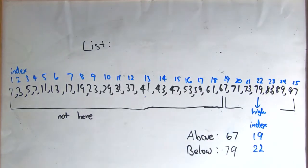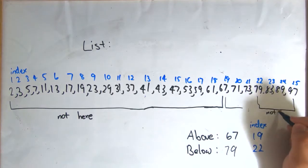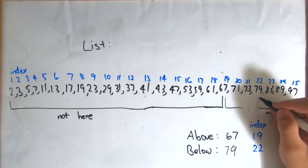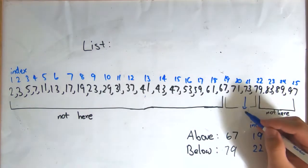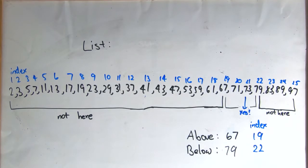79 is bigger than 73, so we have to look between the 19th and 22nd number now. The midpoint between these two numbers to the nearest whole is the 21st number, which turns out to be 73. Therefore, we can say that 73 is in the list of these numbers.